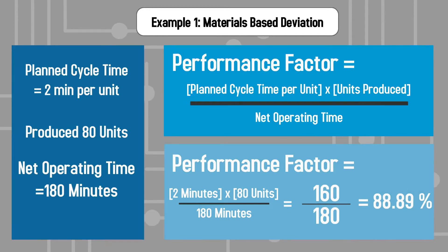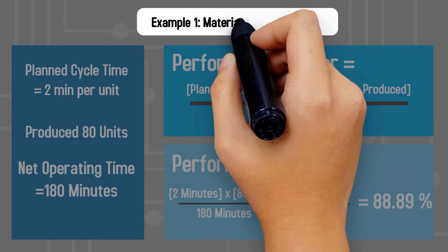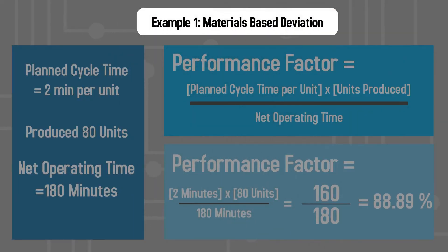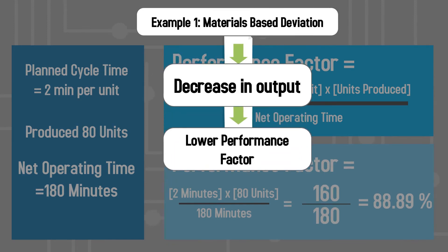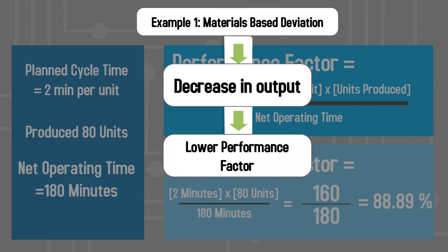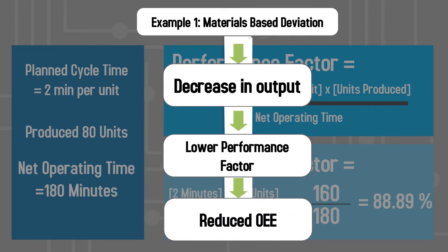Therefore, the performance factor is equal to 88.89%. In this example, inadequate materials caused the deviation, which led to a decrease in output. This resulted in a low performance factor and thus also reduced the company's overall equipment effectiveness.